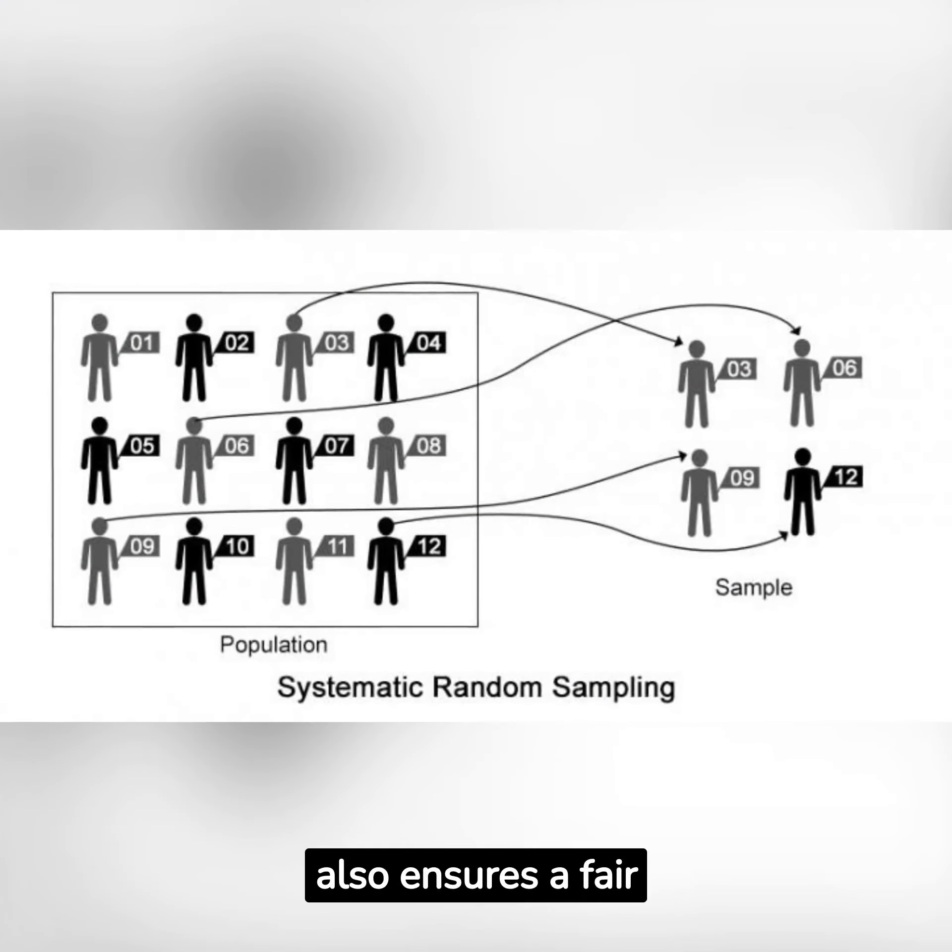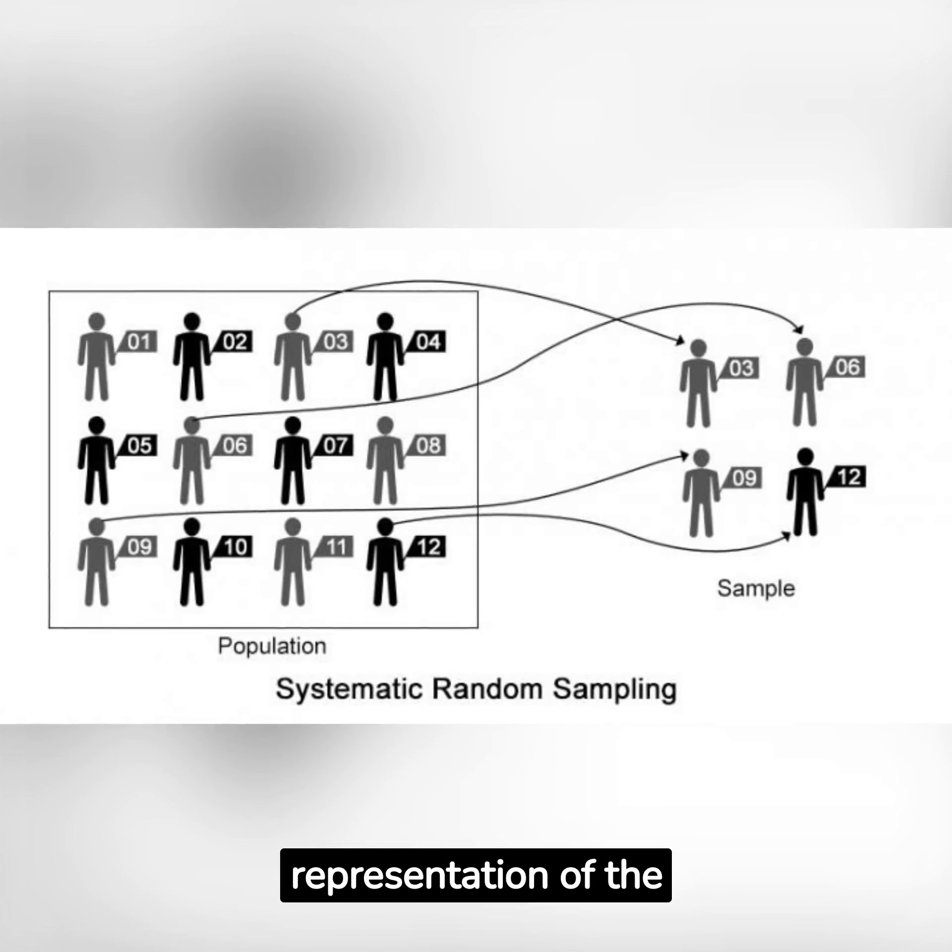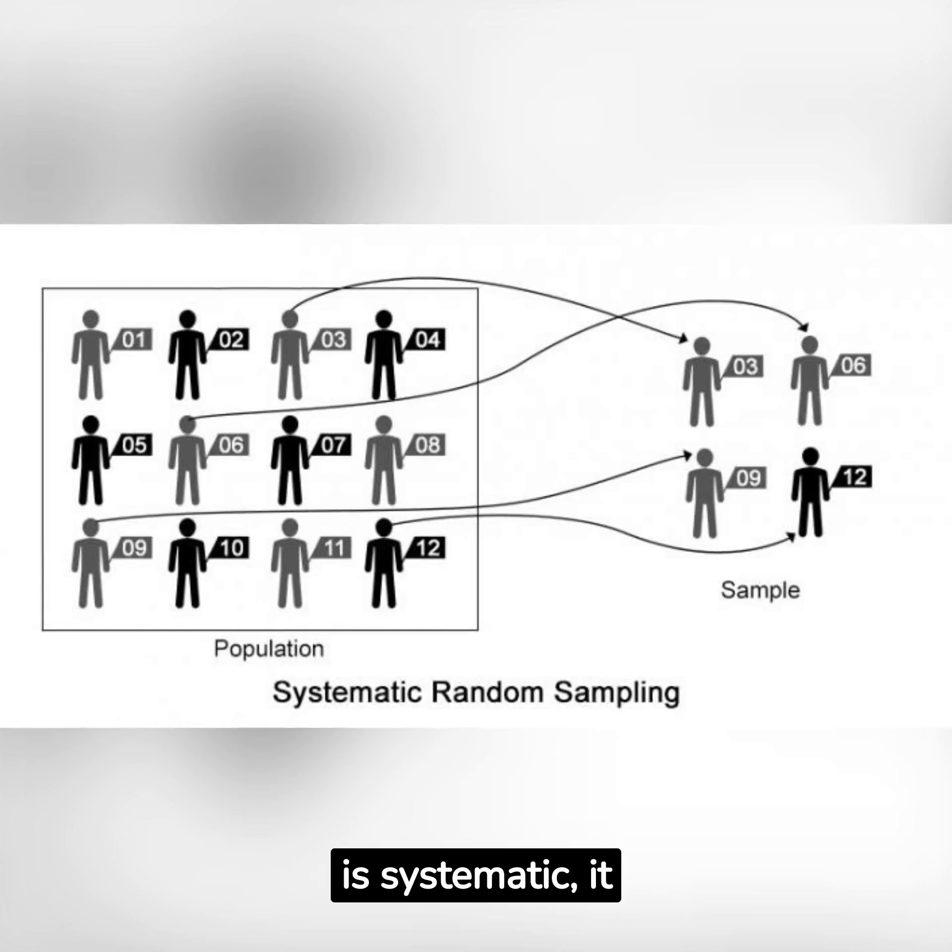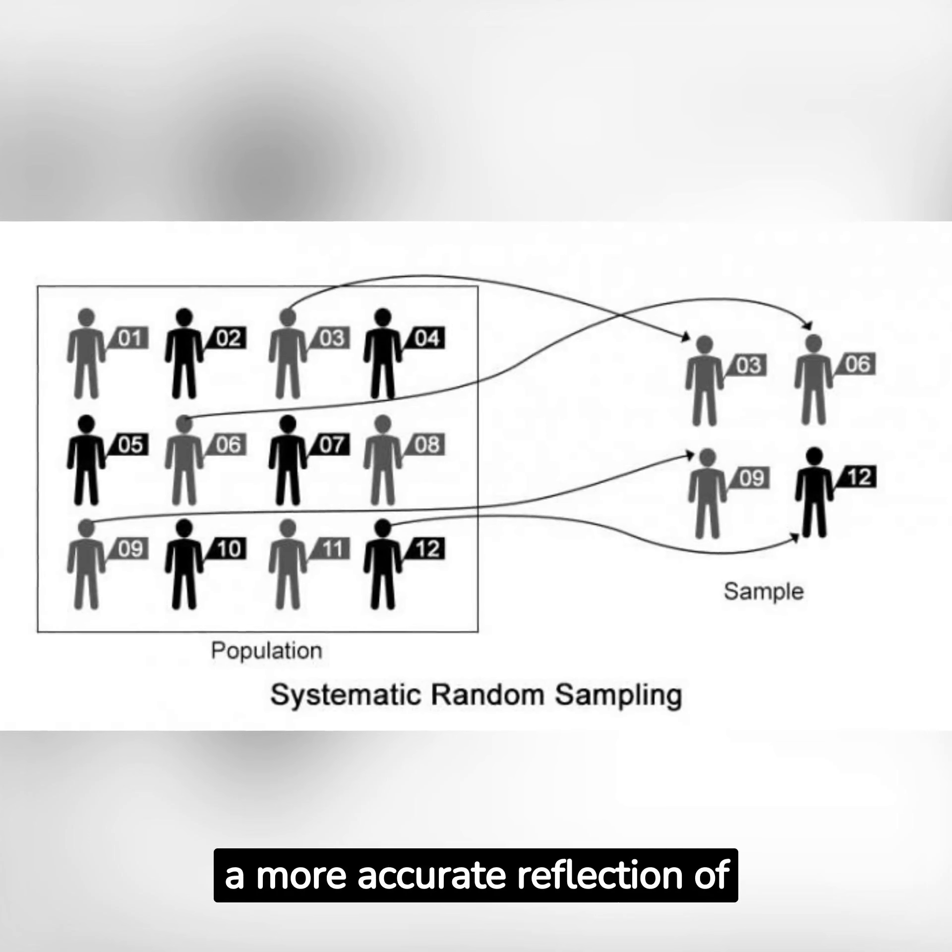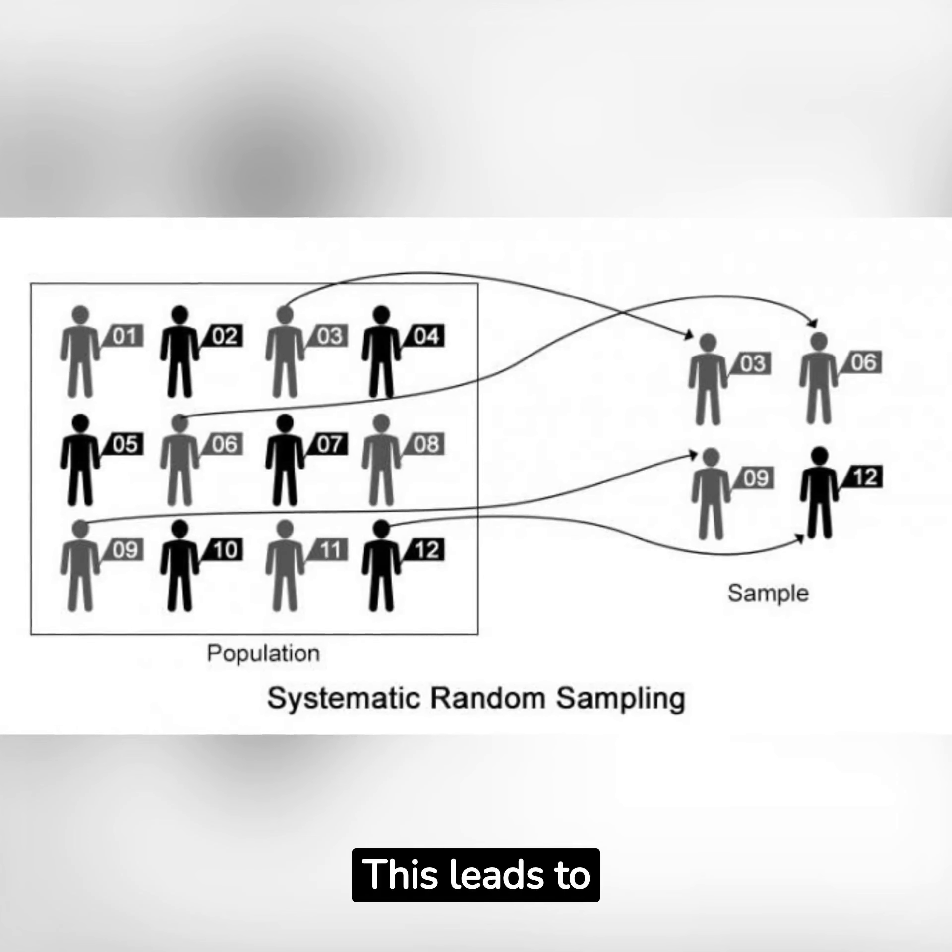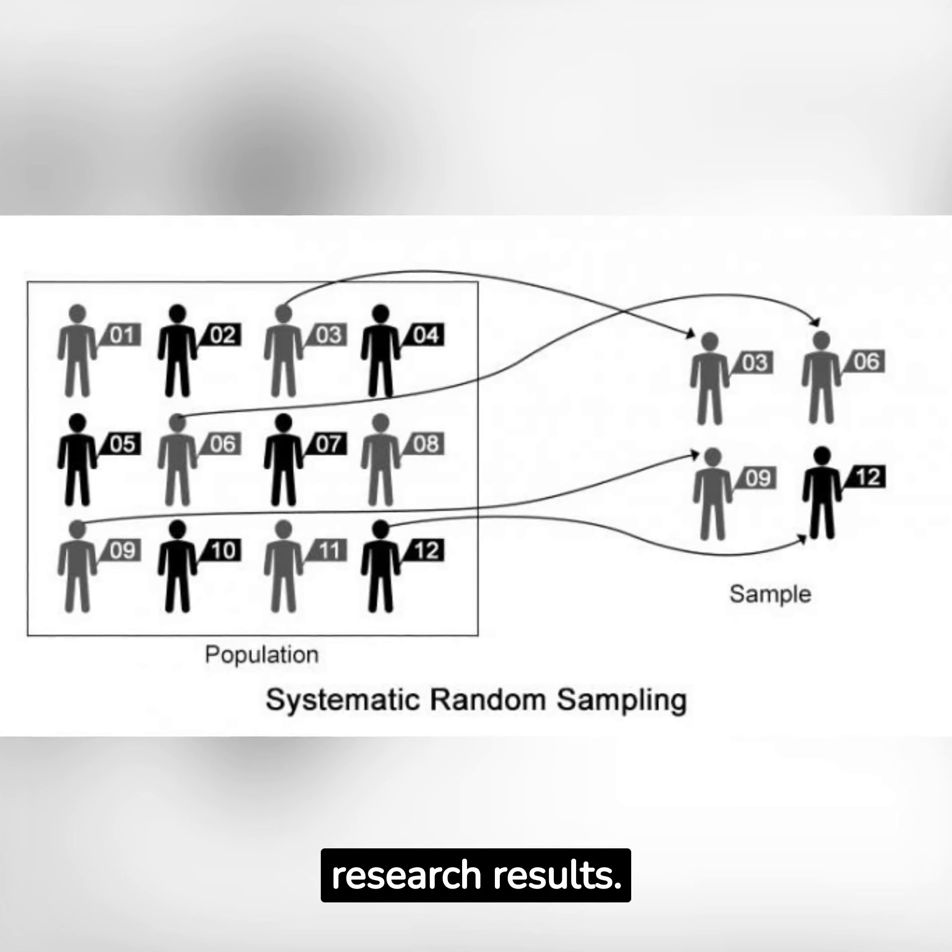Systematic Sampling also ensures a fair representation of the population. Because the selection process is systematic, it eliminates bias, providing a more accurate reflection of the group being studied. This leads to more reliable and credible research results.